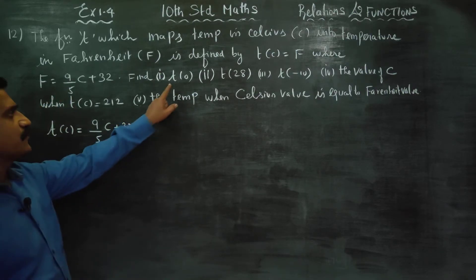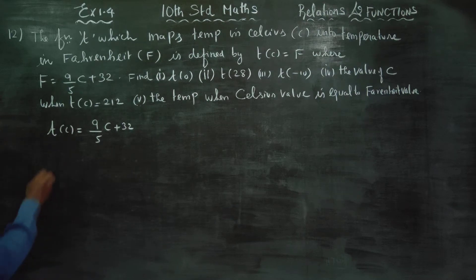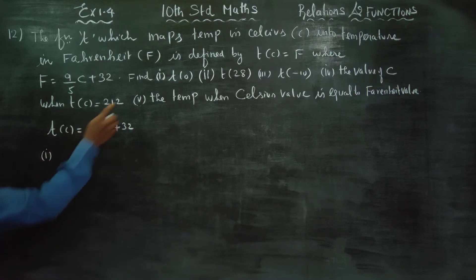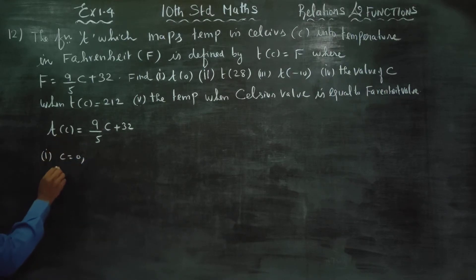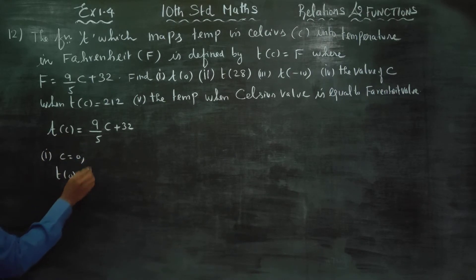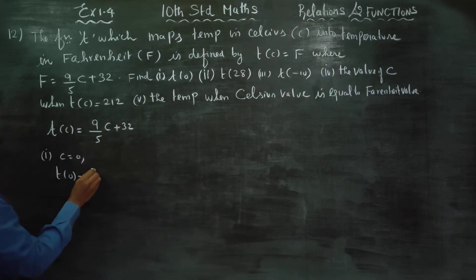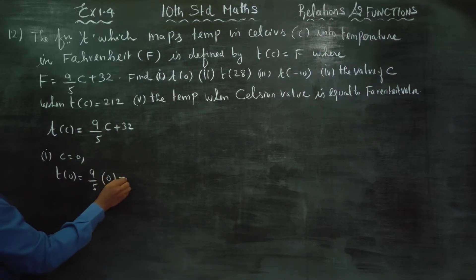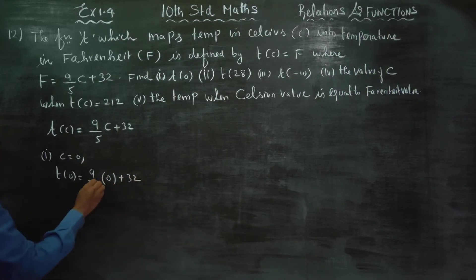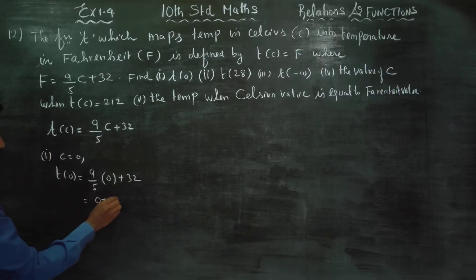First question: find T of 0. When C is equal to 0, T of 0 equals 9 by 5 times 0 plus 32. Anything into 0 is equal to 0, so your answer is 32.